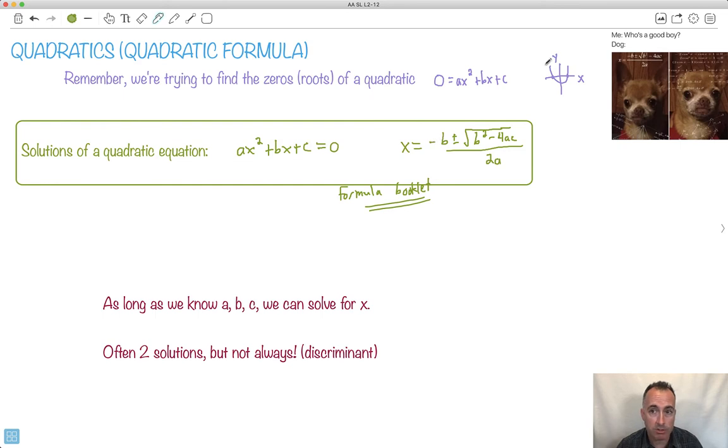In case it doesn't factorize, this way will always work. As long as we know what a is, what b is, and what c is, then we can find x. There's usually two solutions, but not always. It can cross never or only once if it just touches.